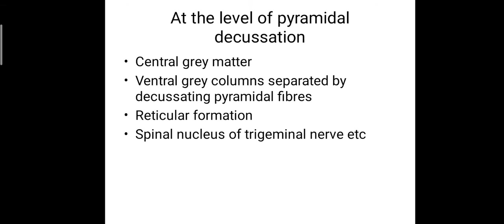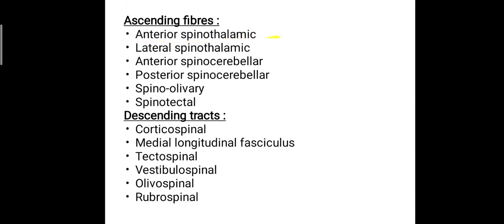At the level of the pyramidal decussation, there will be central grey matter and ventral grey column separated by the decussating pyramidal fibers, the reticular formation, and the spinal nucleus of the trigeminal nerve. The ascending fibers include the anterior spinothalamic, lateral spinothalamic, anterior spinocerebellar, posterior spinocerebellar, spinoolivary, and spinotectal tracts. The descending tracts include the corticospinal tract, medial longitudinal fasciculus, tectospinal, vestibulospinal, olivospinal, and rubrospinal tracts.